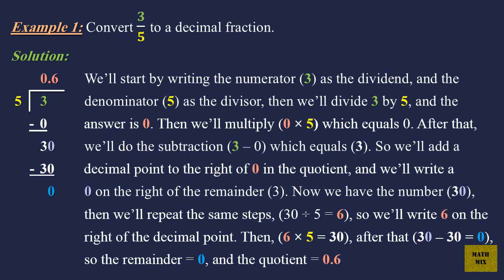Example 1: Convert 3 over 5 to a decimal fraction. Solution: We'll start by writing the numerator, 3, as the dividend, and the denominator, 5, as the divisor. Then we'll divide 3 by 5.